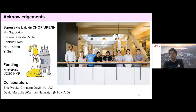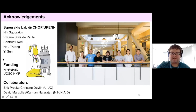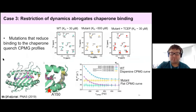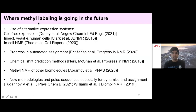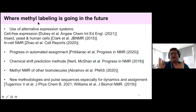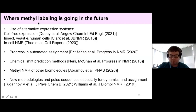Question: Can other biomolecules such as DNA be methylated and studied in a similar way? Yes — the paper to read is the Abramov paper in PNAS just published. They had to develop an entire system starting with a precursor, then using enzymes to actually methylate DNA and then perform NMR on it. It was very complex, but it can be done, and I think there will be many new methods developed for using this approach for DNA and RNA.